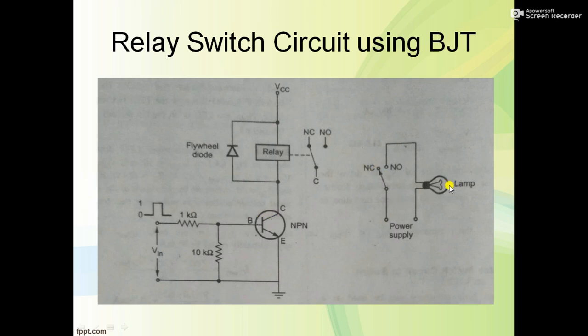When normally closed, when we apply VIN as 0 volt to the base terminal of the transistor, the emitter-base junction becomes reverse biased. When it's reverse biased, IB is not flowing - IB becomes very low. When IB becomes very low, IC current is also zero.